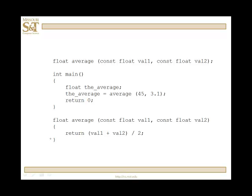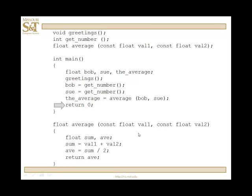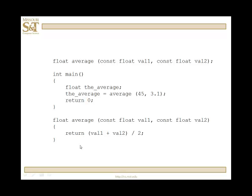I have simplified the definition of the function considerably. Even though it's only one statement, we still do need those curly braces. All I have is: return val1 plus val2 divided by two. I didn't actually need the local variables sum and average — I did that simply to show what could be done; this is more efficient.